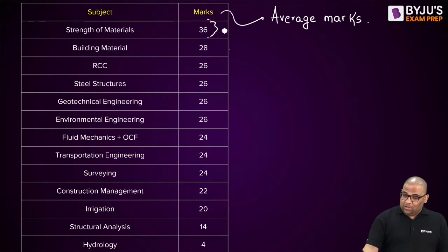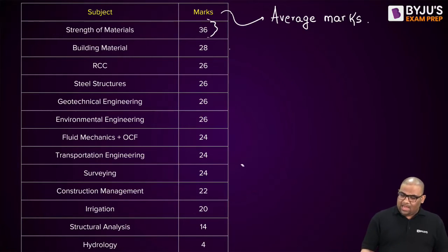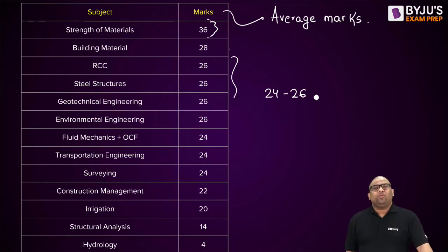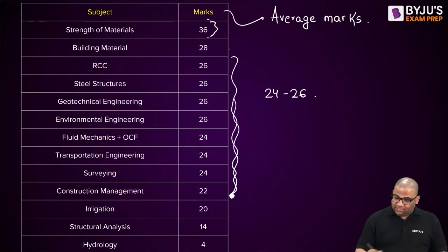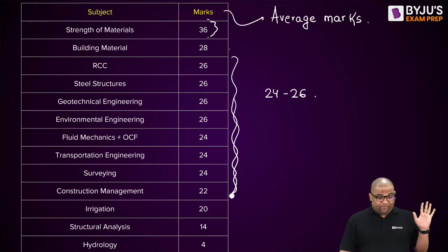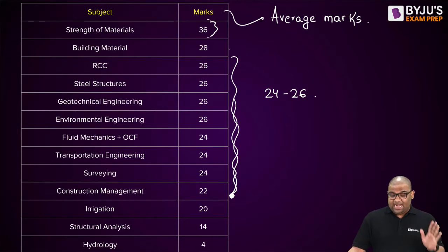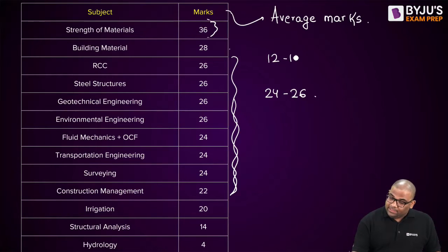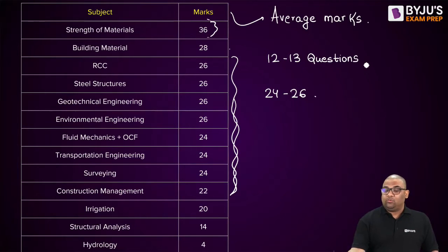All these other subjects are ranging in the marks of 24 to 26, which is 12 to 13 questions each since each question is 2 marks. These subjects include RCC, Steel Structures, Geotech, Environment, Fluid Mechanics including OCF, Transportation, Surveying, and Construction Management.